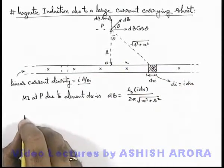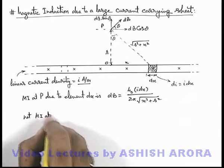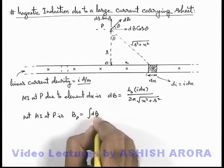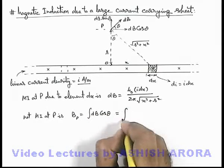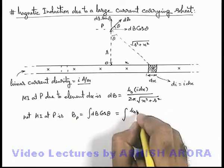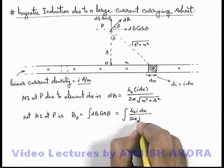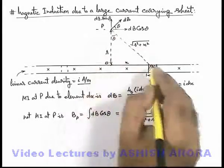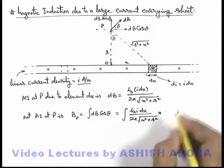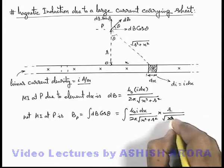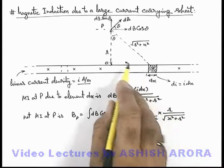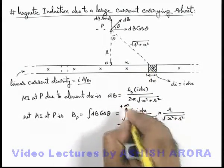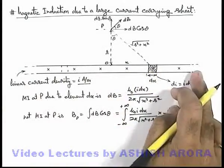So we can write net magnetic induction at P is, this Bp we can write as integration of dB cos theta. If we substitute the values, this will be mu not i dx by 2 pi root of x square plus r square multiplied by cos theta. In this triangle, cos theta we can write as r by root of x square plus r square. And the limits of x for integration will apply from minus infinity to plus infinity because the sheet is considered to be very large.